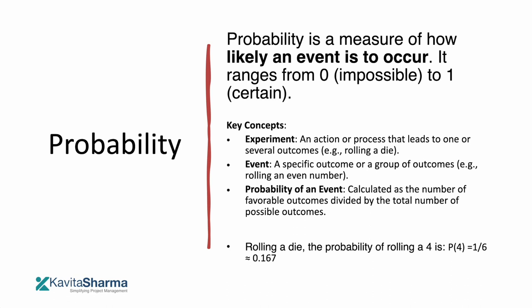Probability is a measure of how likely an event is to occur. Zero means it won't occur and one means it's certain to happen. Key concepts: an experiment is an action or process that leads to one or several outcomes, like rolling a dice. An event is when a specific outcome happens. Probability of an event is calculated as the favorable outcome divided by total outcomes — for example, rolling a four on a six-sided die is 1/6, which is approximately 0.167.